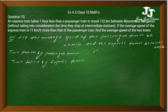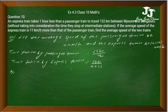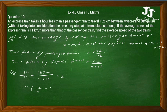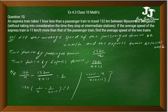The distance is 132 km. Speed of passenger train is x, so time is 132 by x. Speed of express train is x plus 11, so time is 132 by x plus 11. Since the express train takes 1 hour less than the passenger train, we write: 132 divided by x minus 132 divided by x plus 11 equals 1.